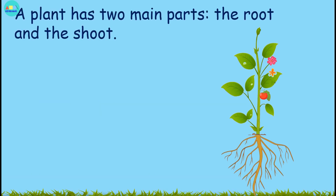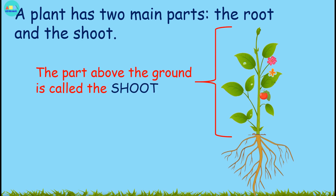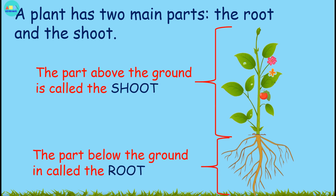A plant has two main parts: the root and the shoot. The part above the ground is called the shoot. The part below the ground is called the root.